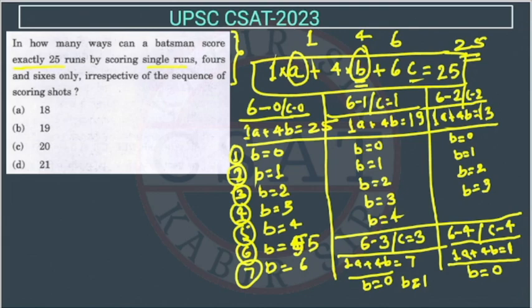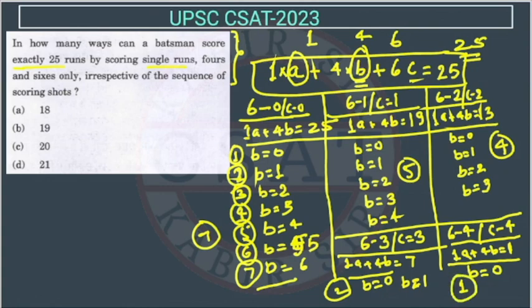So now we will just count the total values. See here we got how many? 7 chances. In this, 1, 2, 3, 4, 5 - 5 chances. Here 4 chances here. 2 chances here and 1 chance here. Now we will add and this is the answer. So this is 7 plus 5, 12, 12 plus 4, 16, 16 plus 3, so 19. So the answer is option b.